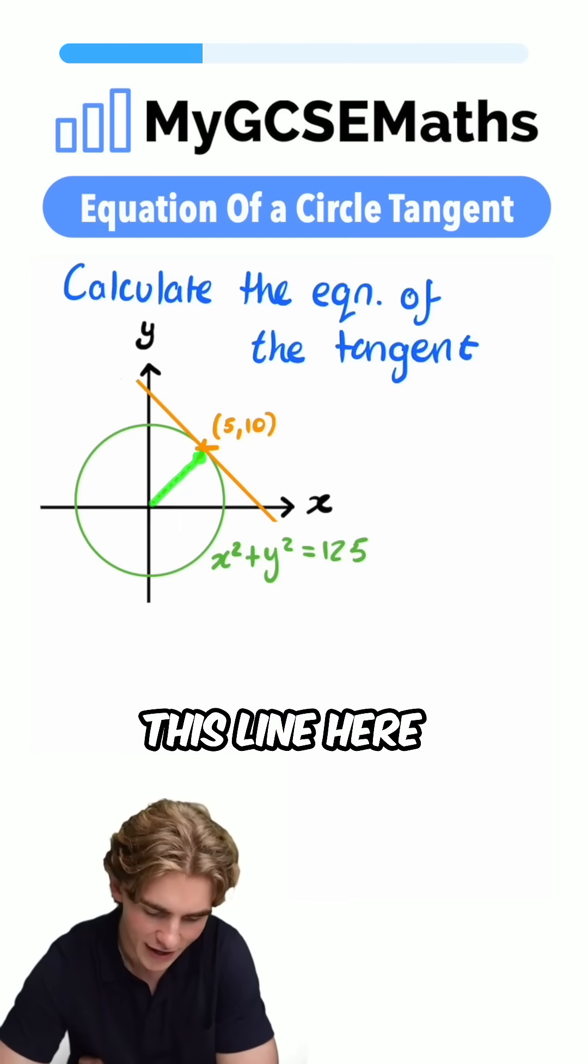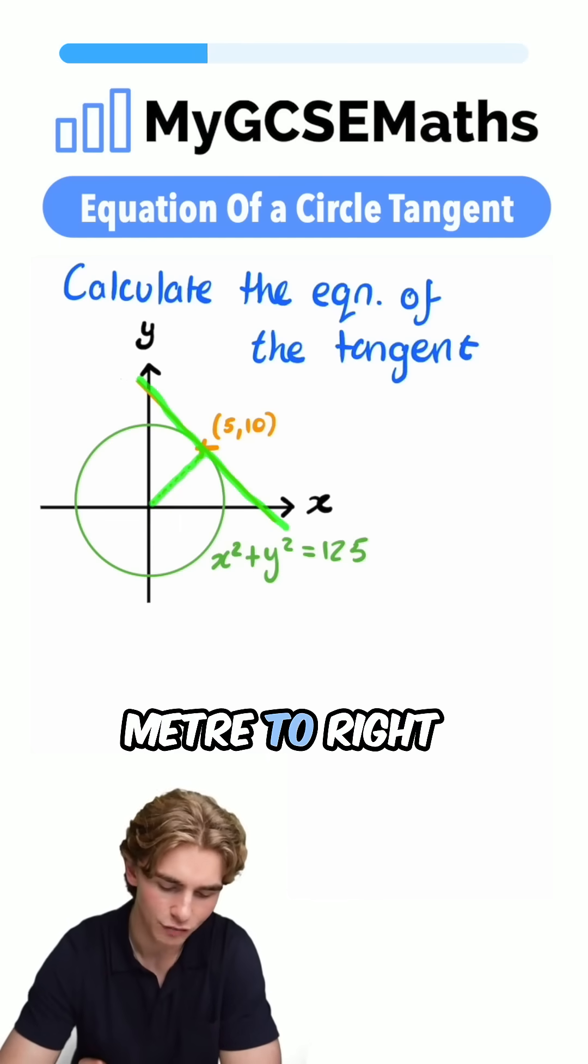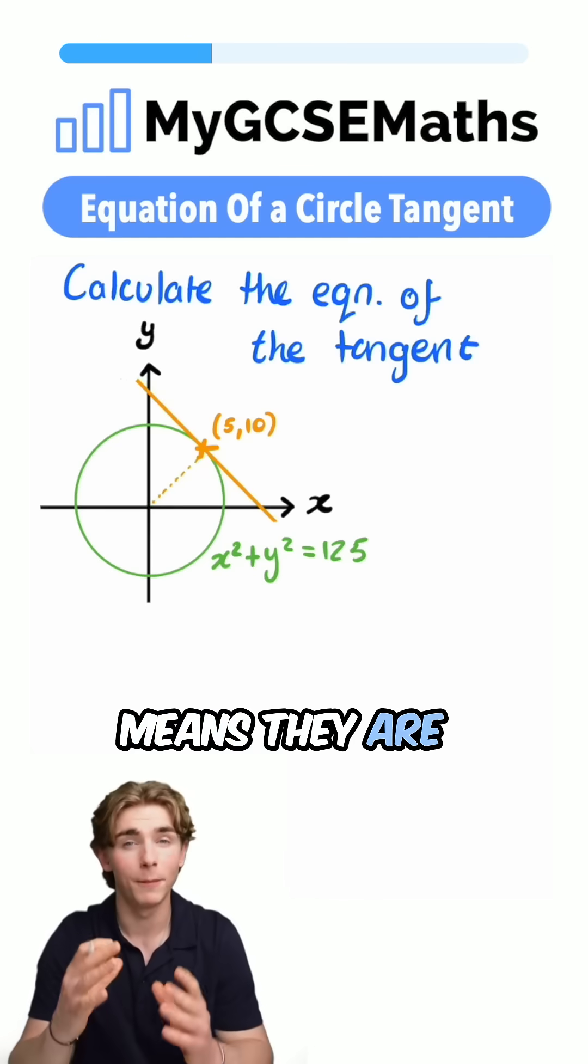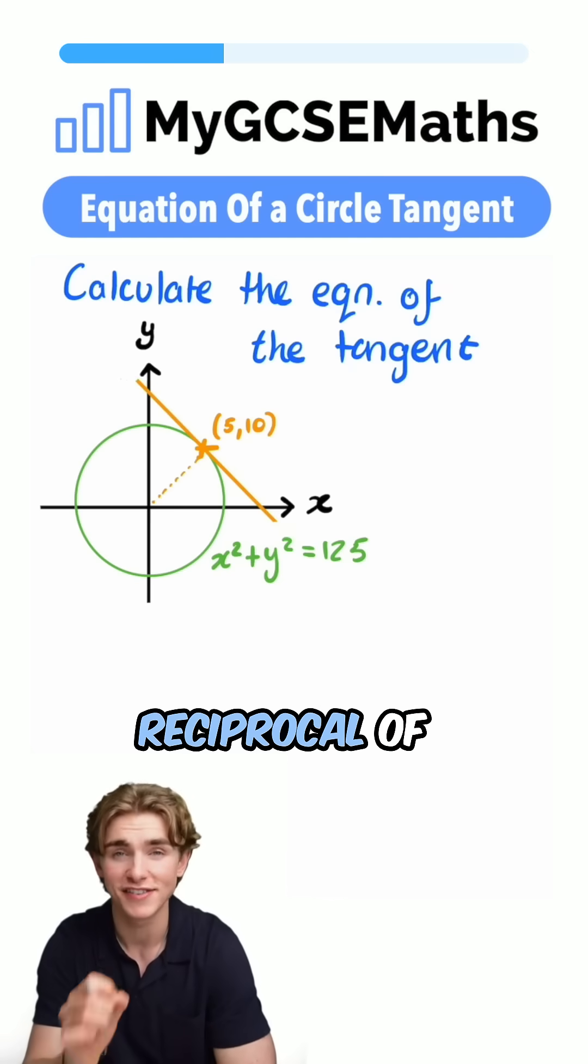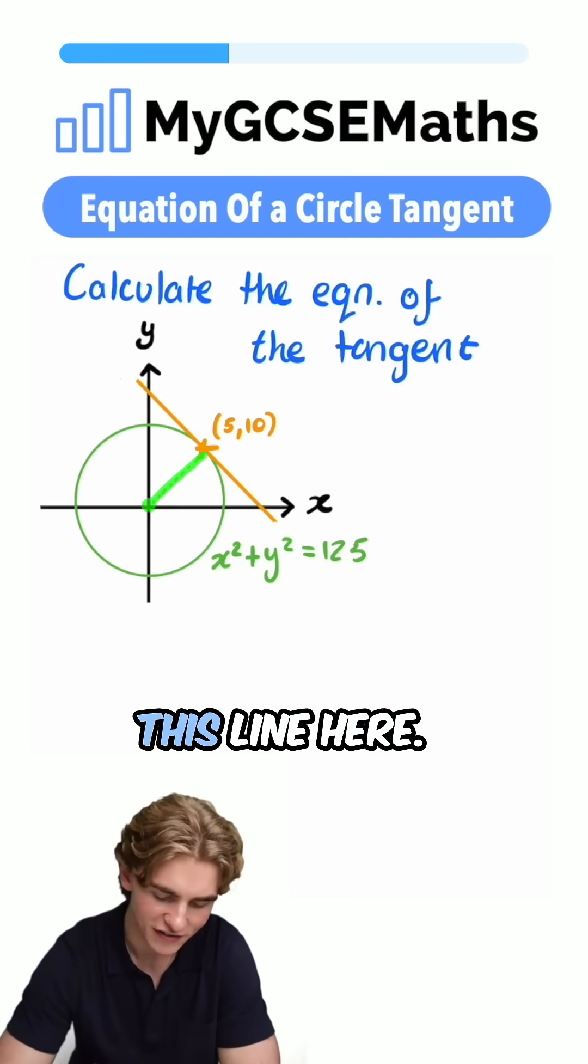We can see that this line here and our tangent meet at a right angle. That means they are perpendicular. And that means that the gradient of the tangent is going to be the negative reciprocal of the gradient of this line here.